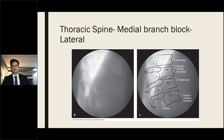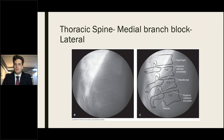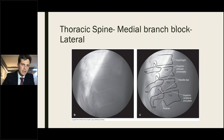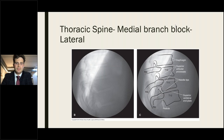Lateral views confirm needle depth for thoracic facet procedures. A true lateral view should be obtained when judging needle depth, with needles advanced to the facet joint line formed by the superior and inferior articular processes. Local anesthetic is deposited at this location, with the needle tip confirmed posterior to the joint line. The highlighted needle tips on the annotated image show correct positioning.